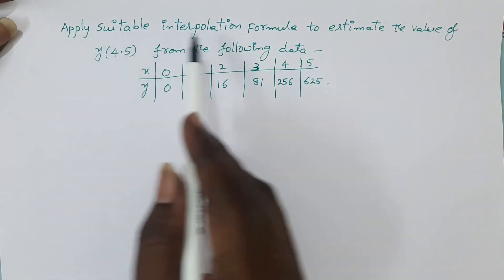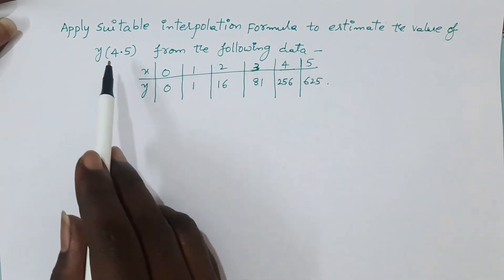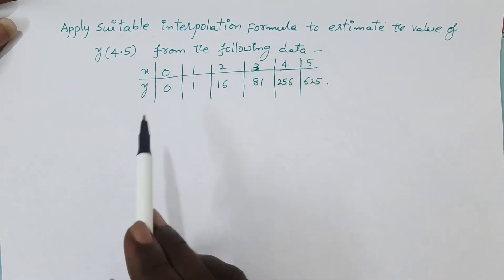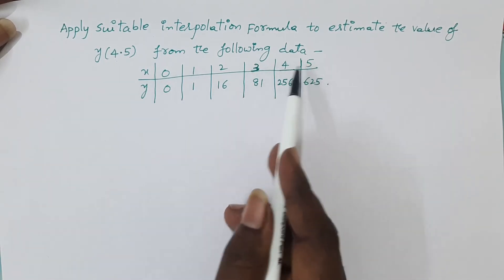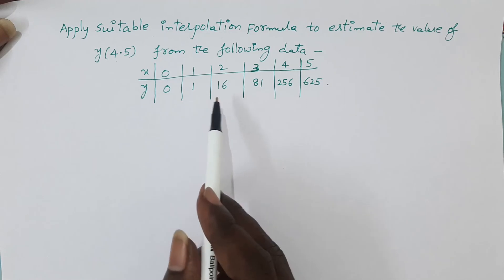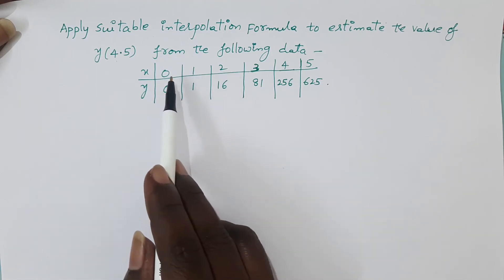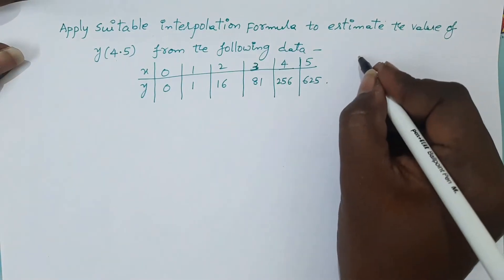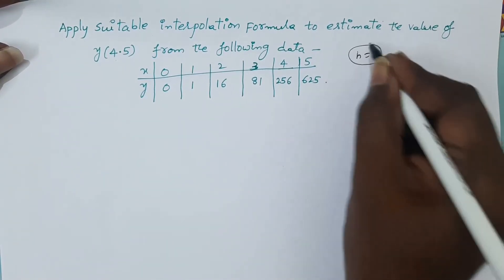Apply a suitable interpolation formula to estimate the value of y at 4.5 from the following data. The x values and y values are provided, and the x values are separated by equal difference. The difference between the x values is 1, so h = 1.